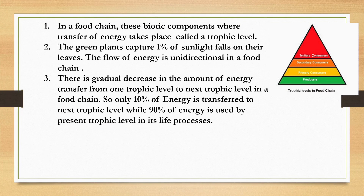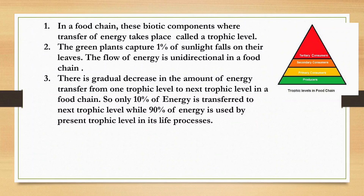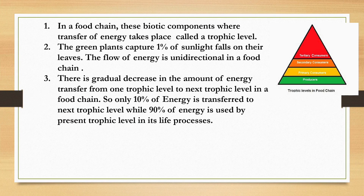Plants can capture only 1% of sunlight. The flow of energy is unidirectional — the energy taken up by primary consumers from producers cannot revert back to the plants. There is a gradual decrease in the amount of energy: only 10% of energy is transferred to the next trophic level. The remaining 90% is utilized in different life processes like metabolism and respiration.